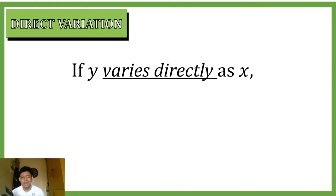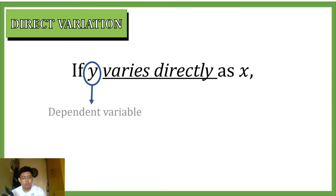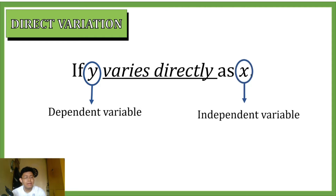So what does this mean? We have two variables: y and x. Let's identify what these two variables are. For y, the variable before the word 'varies directly' is called our dependent variable.